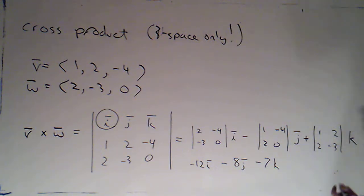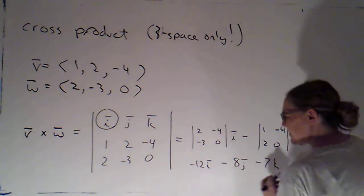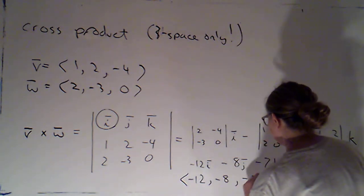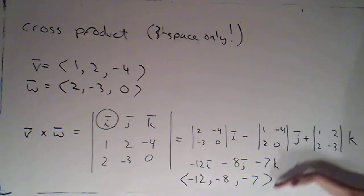Now, very often what I'll do, because I tend to prefer writing things in bracket notation. So this is negative 12, negative 8, negative 7. I can certainly get that after I've written it in terms of i, j, k.